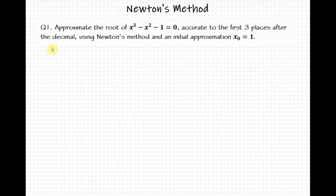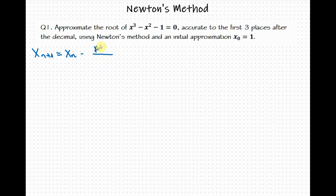The iteration rule for Newton's approximation is the following: x sub n plus 1 equals x sub n minus f of x sub n divided by f prime of x sub n.